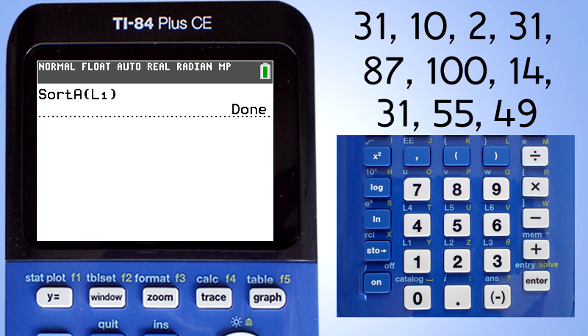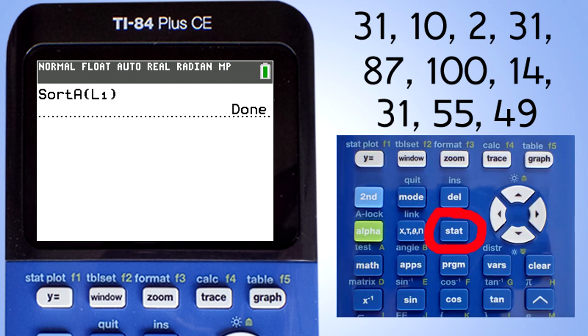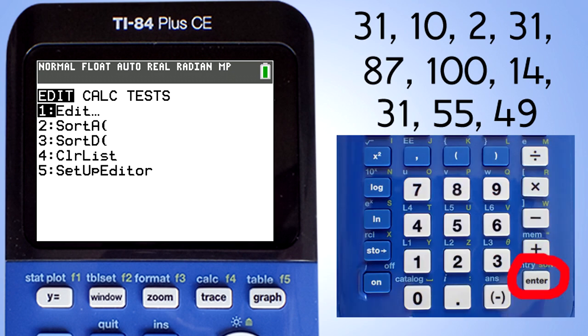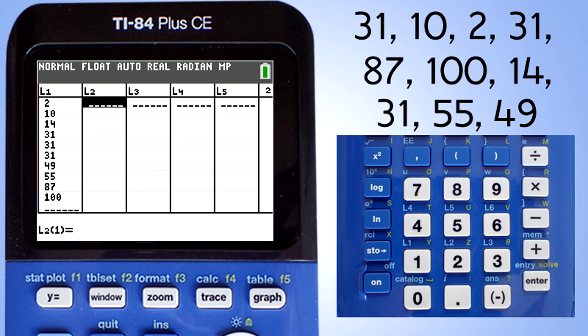Let's go to list L1. Press the stat button. Go to 1, edit, by pressing the 1 key or the enter button. Here's our list sorted from lowest number to highest number. Remember the mode is the number that appears the most. 31 appears three times. Thus 31 is the mode. And it just so happens it is also the median, the middle number.